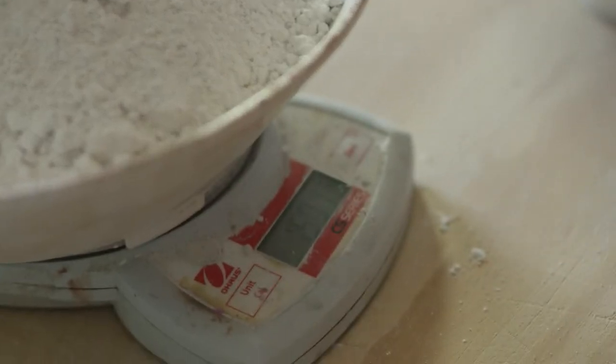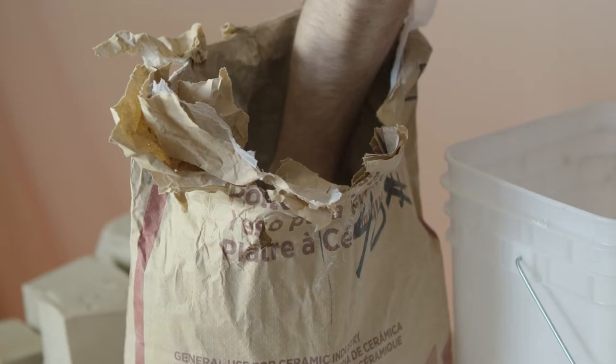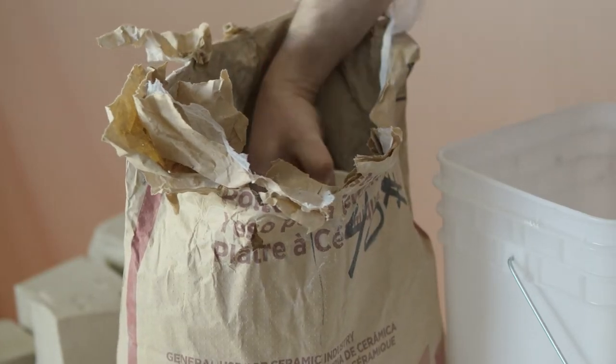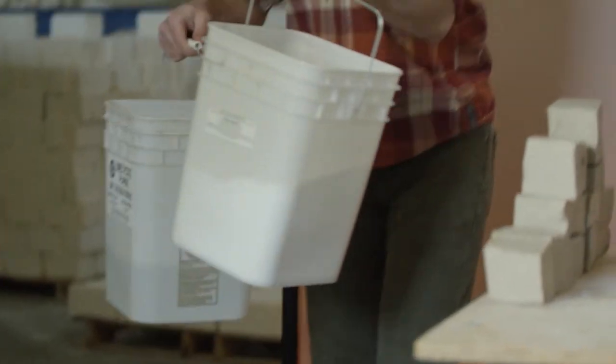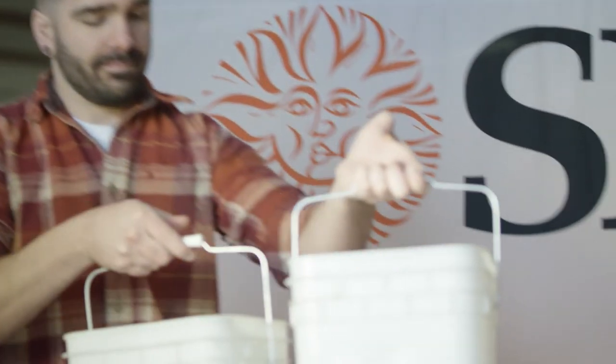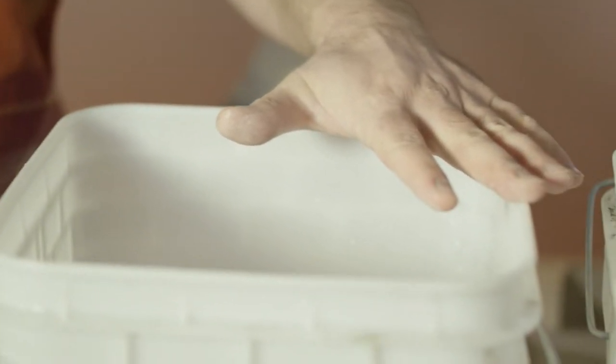You'll want some form of a scale to measure your plaster and a one gallon jug to measure your water. You'll also want two buckets: one to hold your pre-measured dry plaster and one to hold the pre-measured water that you're actually going to be mixing the plaster in.